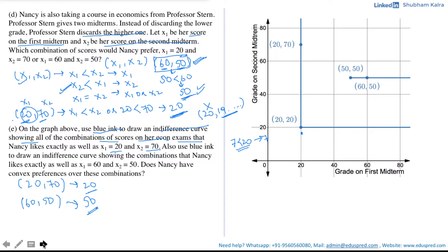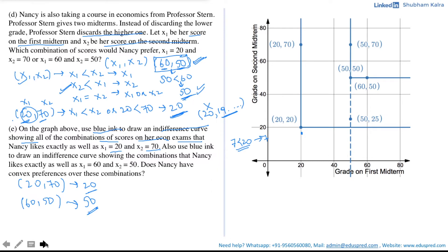Looking for other combinations that give Nancy a score of 50: consider (50, 70) — since 50 < 70, she scores 50, so this lies on the indifference curve. But a point like (50, 25) gives a score of 25 since 25 is lower, so it is excluded. All points below (50, 50) give Nancy a score lower than 50 and are not part of the indifference curve. The final indifference curve is an L-shaped curve with vertex at (50, 50).